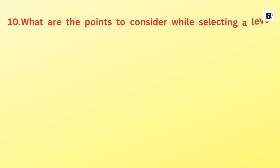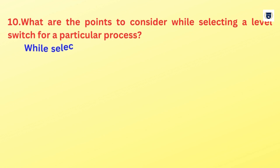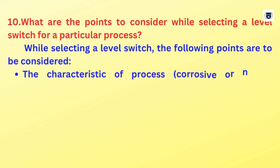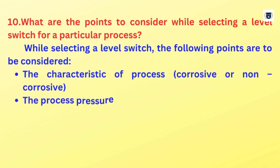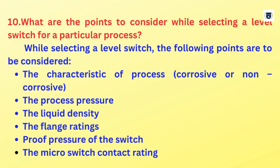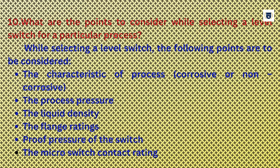What are the points to consider while selecting a level switch for a particular process? While selecting a level switch, the following points are to be considered: the characteristic of the process (corrosive or non-corrosive), the process pressure, the liquid density, the flange ratings, the proof pressure of the switch, and the micro switch contact rating.